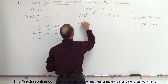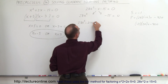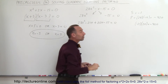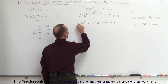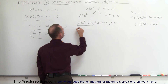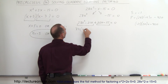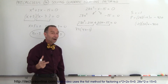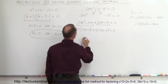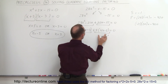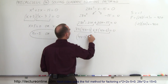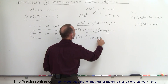So I write this as 28x squared minus 21x plus 20x minus 15 equals 0. When I add those two middle terms I get back minus x, so I know that's correct. Now I look at the first two terms — 7x is common, so I factor out 7x and I'm left with 4x minus 3. For the last two terms, 5 is common, so I factor out 5 and I'm left with 4x minus 3 equals 0. Notice both terms share the factor 4x minus 3, which I can factor out, leaving 7x plus 5 — so the expression becomes (4x minus 3)(7x plus 5) equals 0.